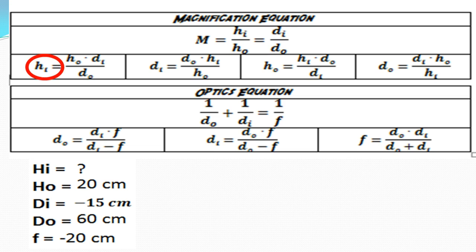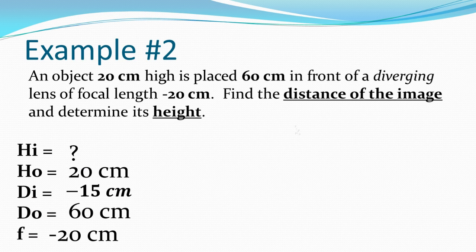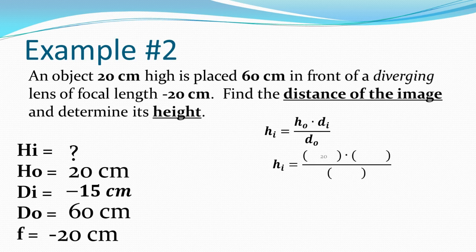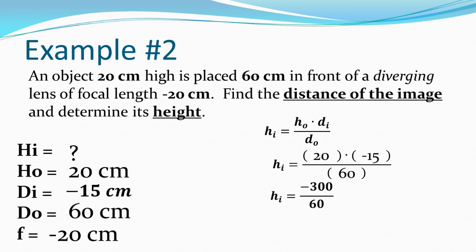Now let's find the height of the image using hi = ho × (di / do). Substituting: ho = 20, di = −15, do = 60. Simplifying: 20 times −15 = −300, divided by 60 = −5 centimeters. The height of the image is −5 centimeters, meaning the image is inverted and smaller than the original object.